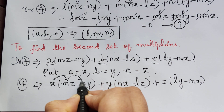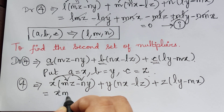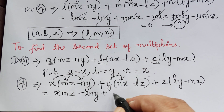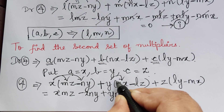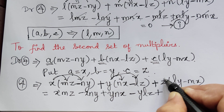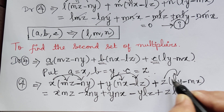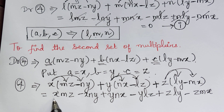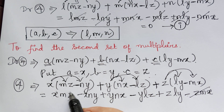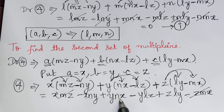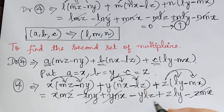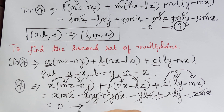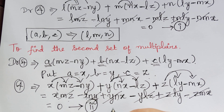Expanding: xmz minus xny plus ynx minus ylz plus zly minus zmx. Checking cancellations: xmz and minus zmx cancel, minus xny and plus ynx cancel, minus ylz and plus zly cancel. So the denominator equals 0. We mark this result as equation 2. Therefore the second set of multipliers (a, b, c) is chosen as (x, y, z).